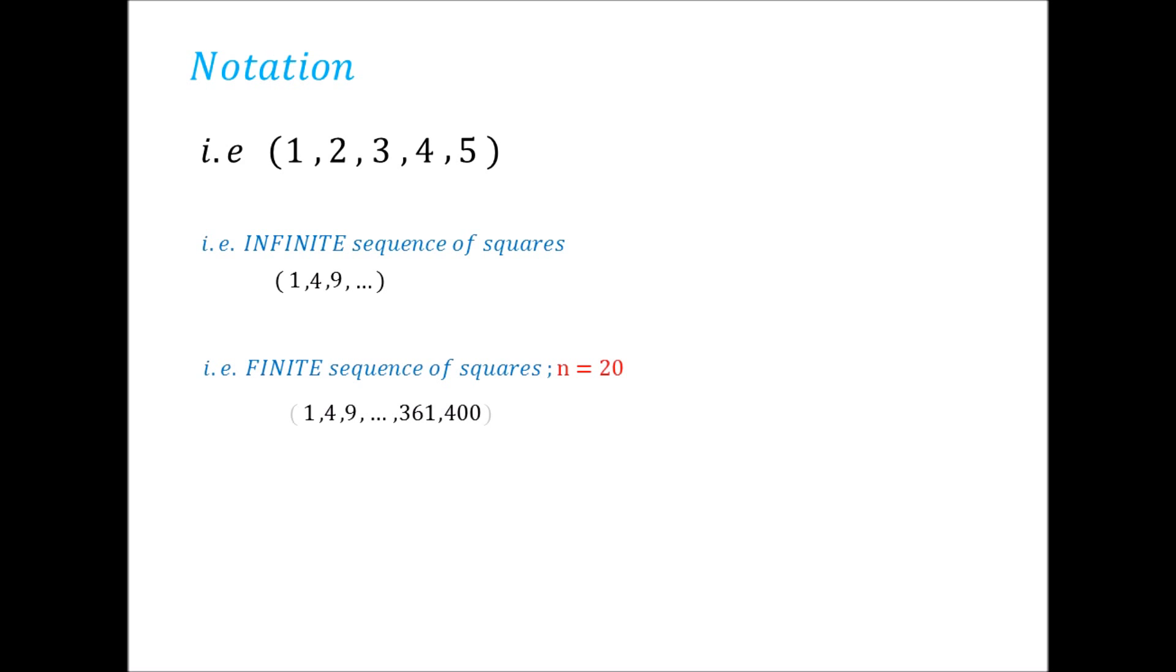Because the sequence ends at 361 and then 400, which are 19² and 20² respectively, the 19th and 20th terms. Here are other examples of infinite sequences versus finite sequences written out. I suggest you pause and analyze them before moving on.